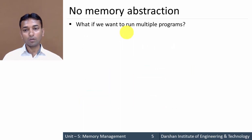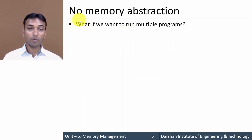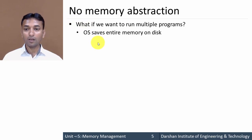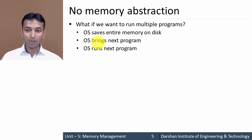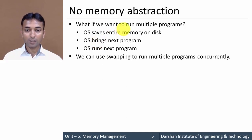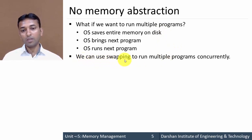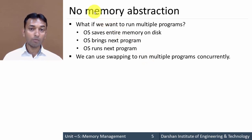Now, what if we want to run multiple programs with no memory abstraction? Then the OS must save the entire memory onto the disk, bring the next program to execute, and run that next program. This means swapping comes into the picture — we can use swapping to run multiple programs concurrently in the case of no memory abstraction.